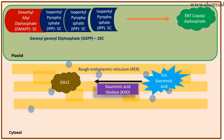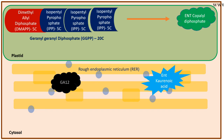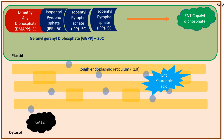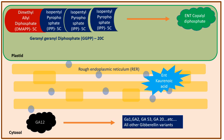Kaurenoic acid oxidase (KAO) converts ENT-kaurenoic acid into gibberellic acid 12 (GA12), which is known as the primary source of gibberellins produced by the plant cell. Once this GA12 is produced in the rough endoplasmic reticulum, it moves out into the cytosol, where further modification of GA12 produces many different varieties of gibberellins such as GA1, GA2, GA53, GA20, and many more — each involved in specific activities in plant cells.